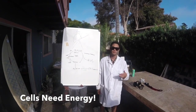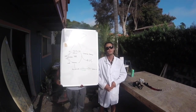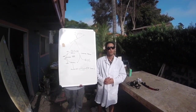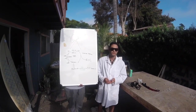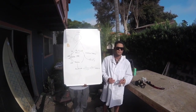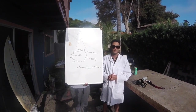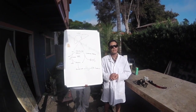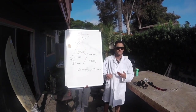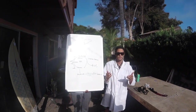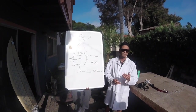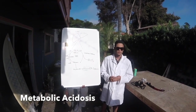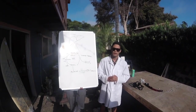Cells need glucose and insulin to function properly. Glucose comes from the food you eat, and insulin is produced by the pancreas. When you drink alcohol, your pancreas may stop producing insulin for a short time. And instead, your body secretes glucagon. Without insulin, your cells won't be able to use the glucose you consume for energy. To get the energy you need, your body will start to burn fat. When your body burns fat for energy, byproducts known as ketone bodies are produced.